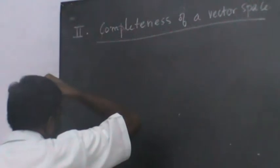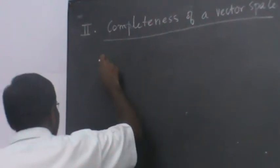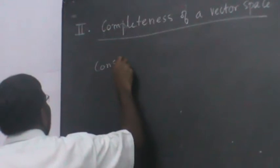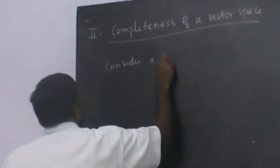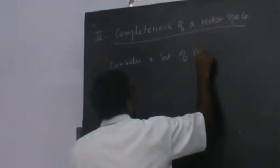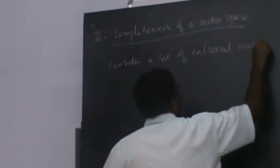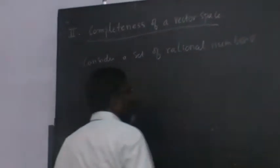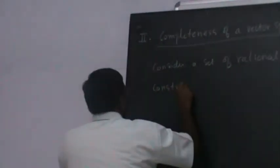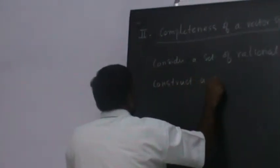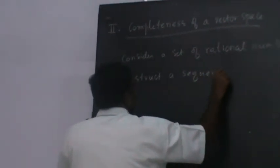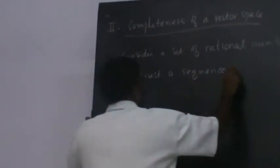So let me just take — consider the set of rational numbers. At least I have only rational numbers. Now, using these rational numbers, I can construct a sequence — a sequence of rational numbers.